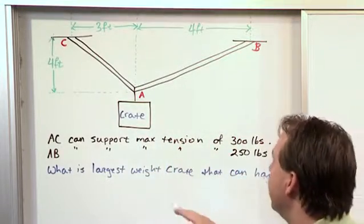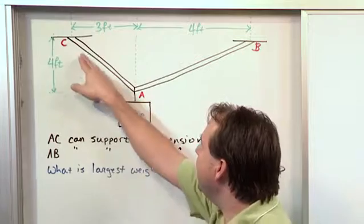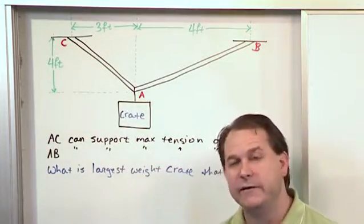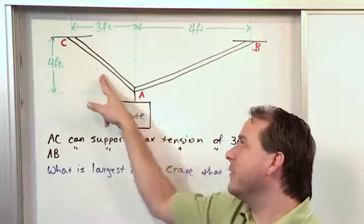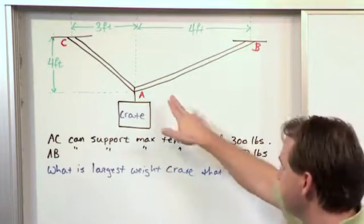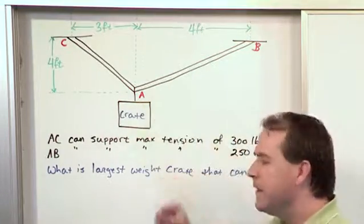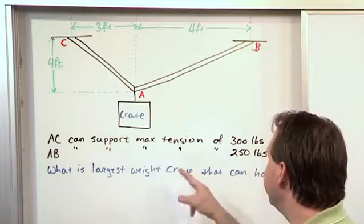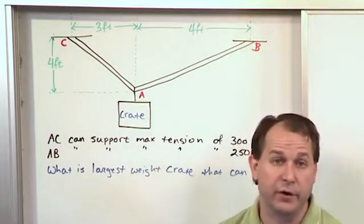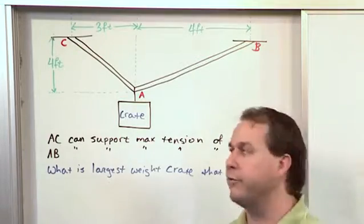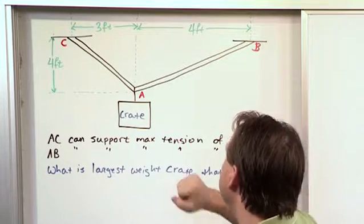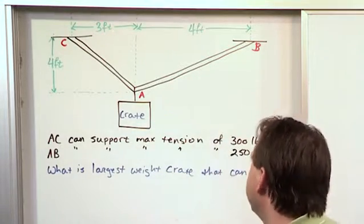Now here's the part of the problem that's interesting. It says that member AC can support a maximum tension of 300 pounds before it breaks. So that means if I go to 301 pounds of tension in that guy, it's going to snap, and everything's going to fall apart. Then it also says that member AB is able to withstand a maximum tension of 250 pounds. Maybe these guys are made from different types of wood or something. They have different structural strengths. So anyway, this guy can take a maximum tension or force of 300 pounds, and this guy can take a maximum tension of 250 pounds.